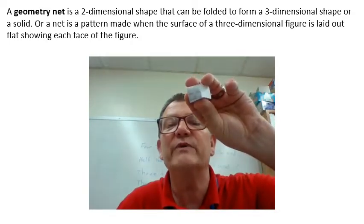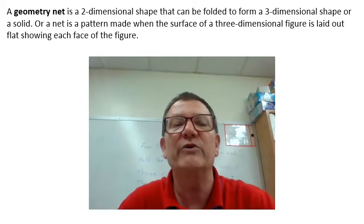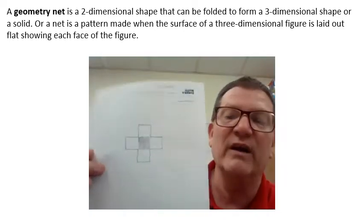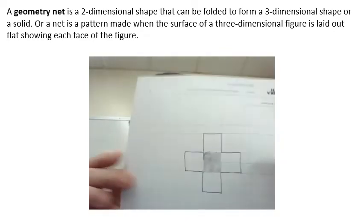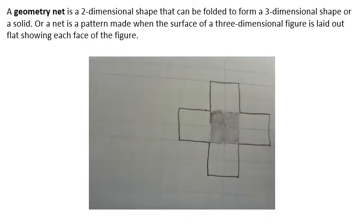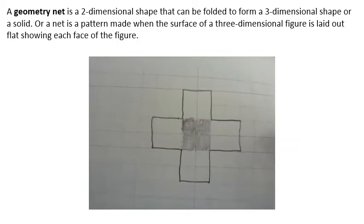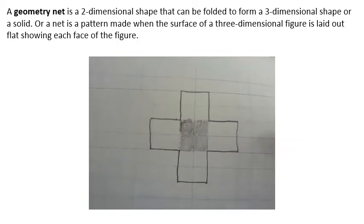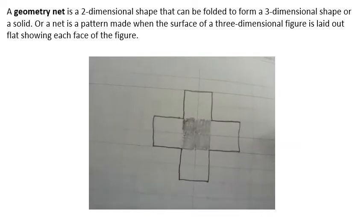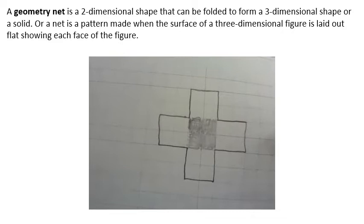the surface of the three-dimensional figure is laid out flat showing each face of the figure. So if you look at this sheet of paper right here, I'll try to get it up close so you can see it. If you notice the shaded area, the shaded area is the base - that's the area on the bottom. You can see it's four centimeters squared, so this is squared for its area, and then I have the four sides drawn up.